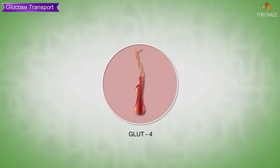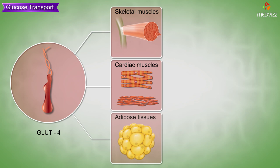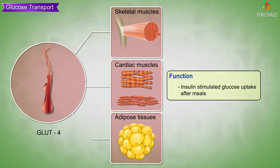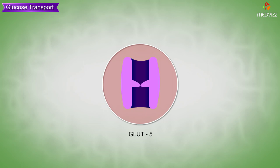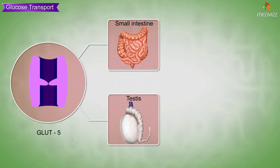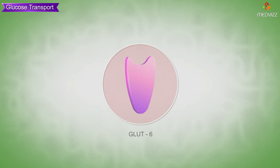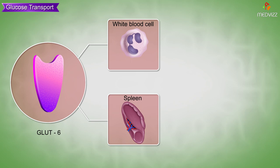GLUT3 is located in the brain neurons, placenta, and kidneys; its function is glucose uptake during fasting. GLUT4 is located in skeletal muscles, cardiac muscles, and adipose tissues; its function is insulin-stimulated glucose uptake after meals. GLUT5 is located in the small intestine and testes (sperms); its function is fructose transport.